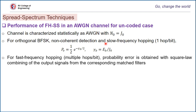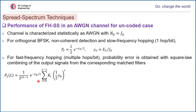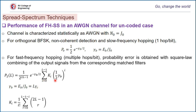For fast frequency hopping, where there are multiple hops per bit, the probability of error is calculated by implementing square law combining of the output signals of matched filters. The probability of error is defined mathematically as: P2(l) = [1 / (2(2^l − 1))] · e^(−γb/2) · Σ(i=0 to l−1) [ki · (½γb)^i], where γb is the signal-to-jamming power ratio defined as l times γc.